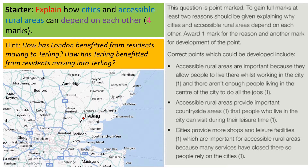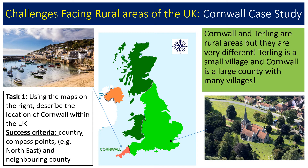Cities provide more shops and leisure facilities, which are important for accessible rural areas because many services have closed there. People in Turling rely on Chelmsford and London for shopping and leisure. Moving on to our main content, we're going to focus heavily on Cornwall as a case study, but also thinking about Turling. Cornwall is a large county with many villages, whereas Turling is a small village within the county of Essex. Make sure you understand where both are on the map.